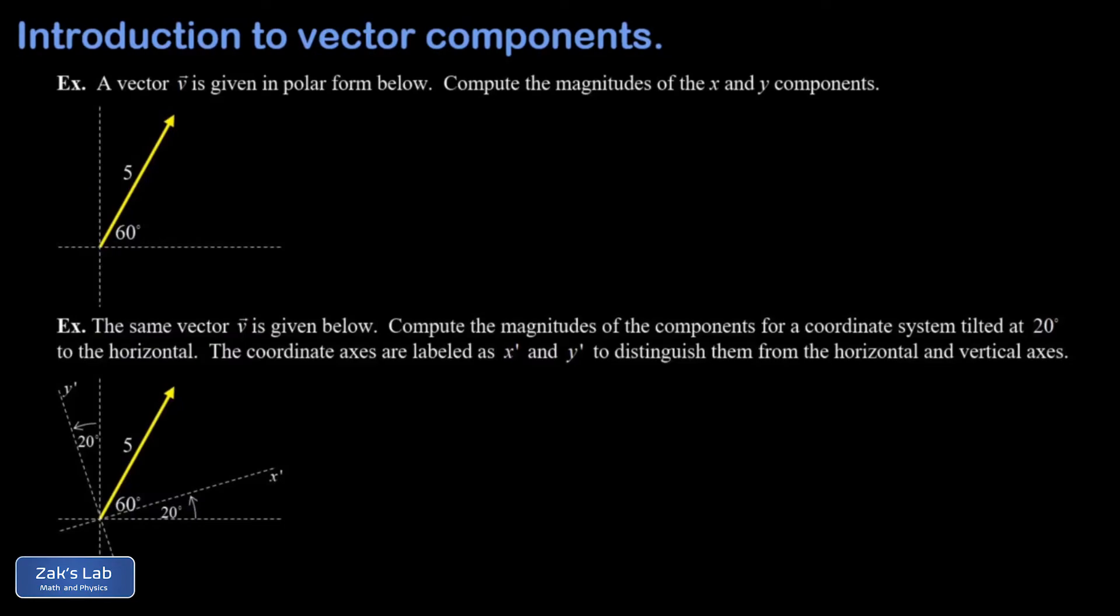We'll wrap things up by computing a couple sets of vector components. In the first example we want to compute the x and y components of a vector v, and in the second example we compute components for the exact same vector but we use a tilted coordinate system which changes the size of the components. In our first example we're told the vector v is given in polar form below—compute the magnitudes of the x and y components.